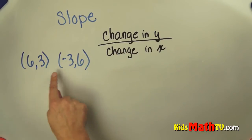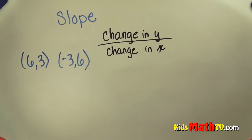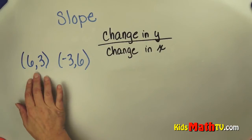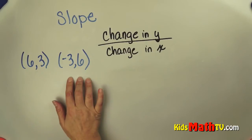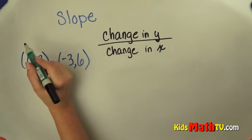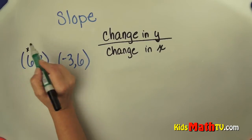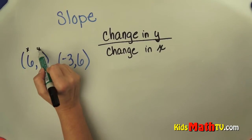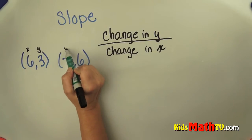So here we have some coordinate pairs: 6, 3 and negative 3, 6. I know that the first number is always the x, and the second number is the y.